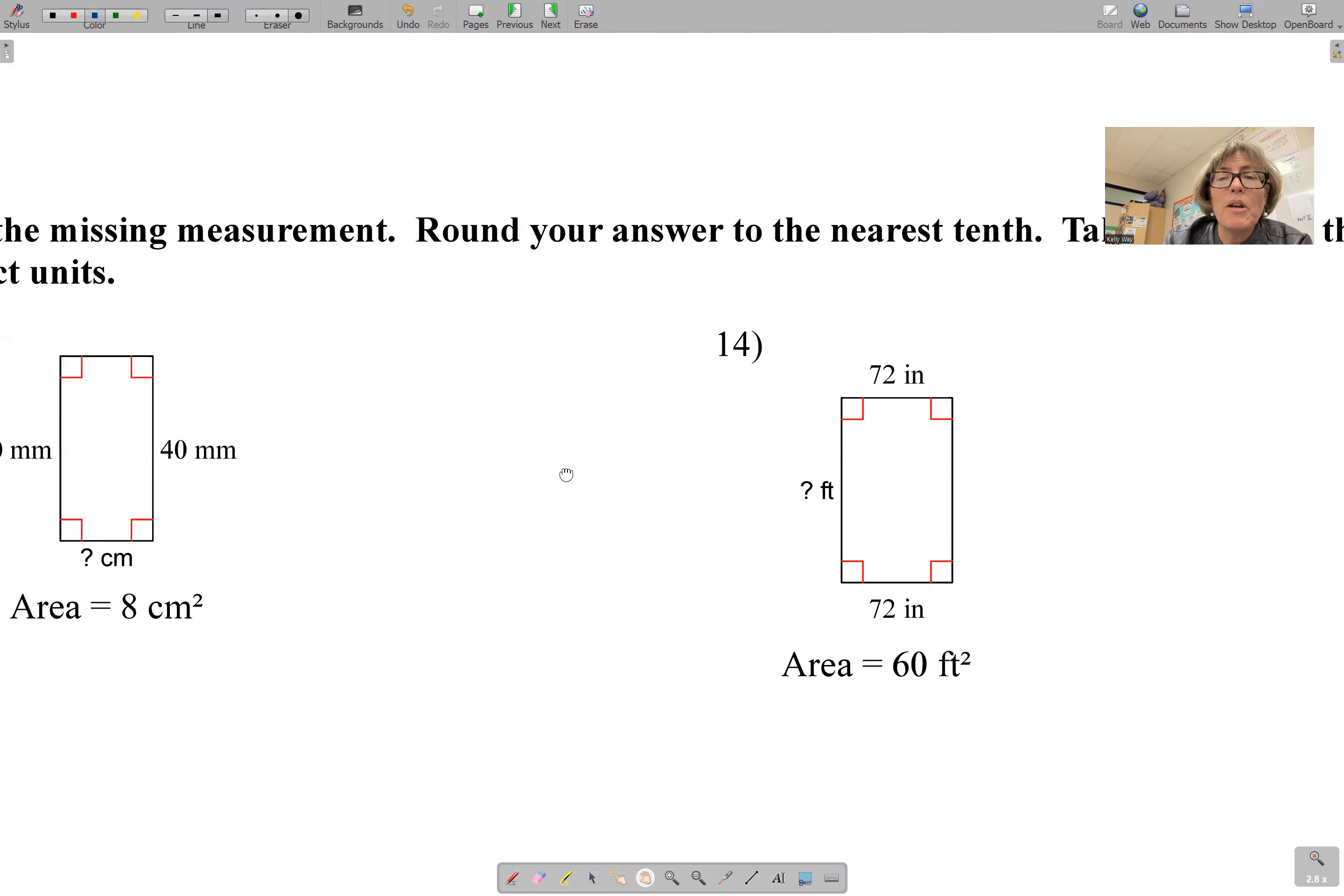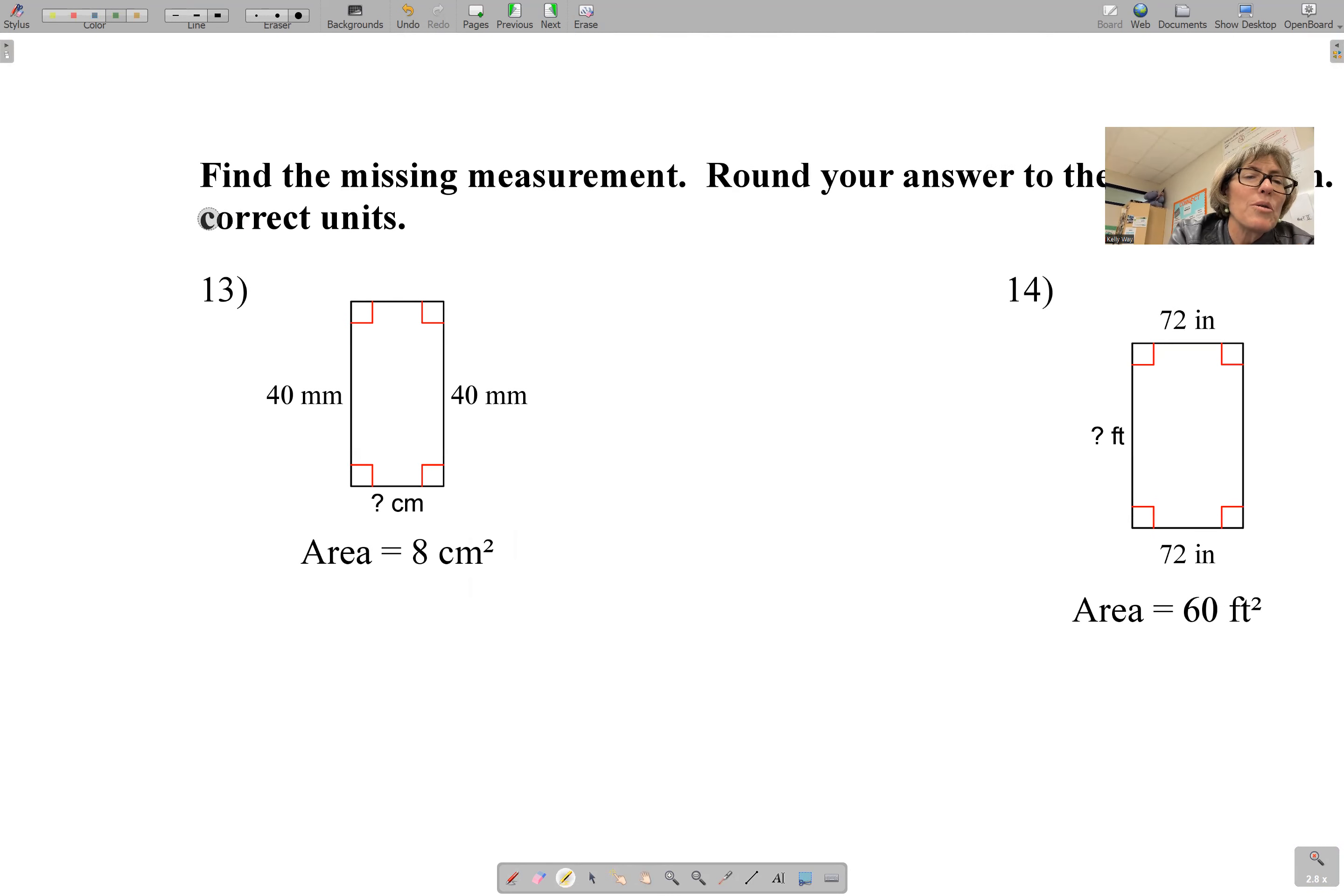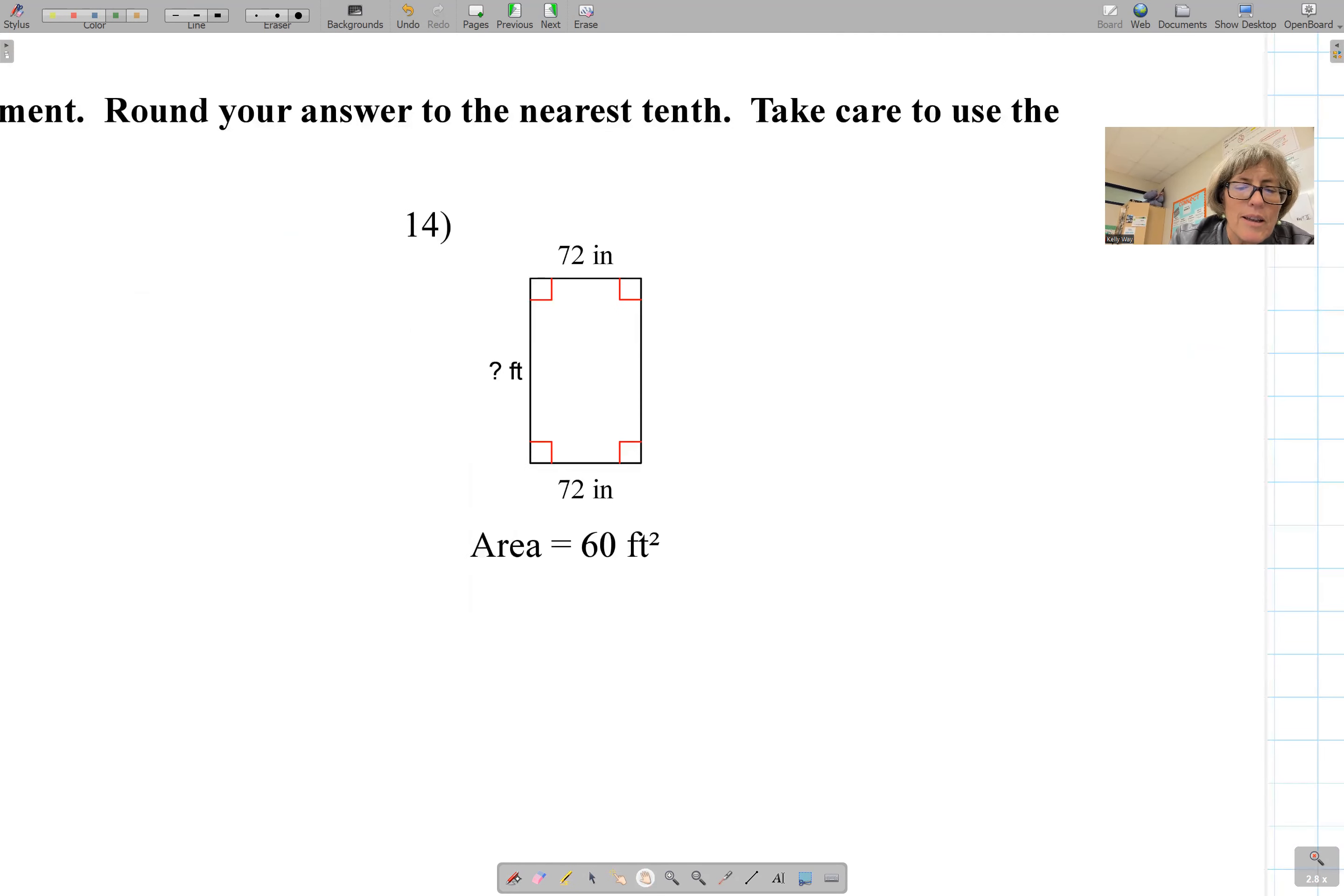It says, find the missing measurement. Round your answer to the nearest tenth. Take care to use correct units. So be very careful here. Watch very carefully. Here on the right. I am given the area. Let's shade the area here. I'm given the area. And the area here is 60 square feet. Now, I know, in general, area equals whatever the length is.